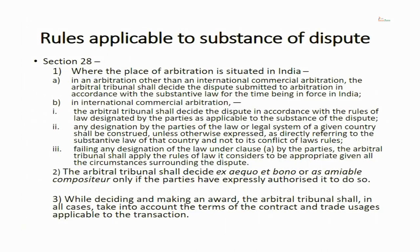Section 28 is about rules applicable to substance of dispute. In the last class, I discussed Section 19 which talks about procedural autonomy — autonomy of parties to choose the procedural law. Section 28 is about autonomy of parties to choose substantive law, meaning substantive law of contract. Section 28(1) says where the place of arbitration is situated in India — so we are talking about India-seated arbitration. Clause A relates to arbitration between Indians in India, other than international commercial arbitration. In such a case, arbitration shall be done according to the laws of India. Parties do not have freedom to deviate from Indian law.